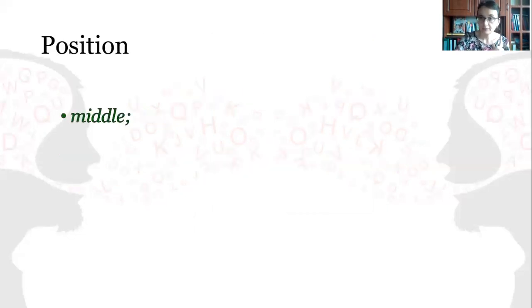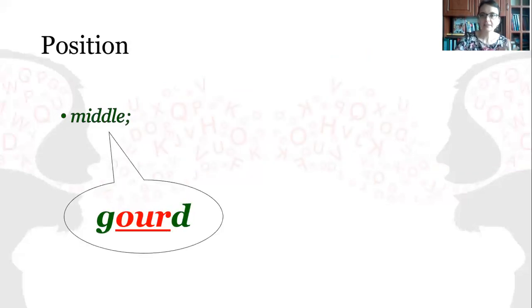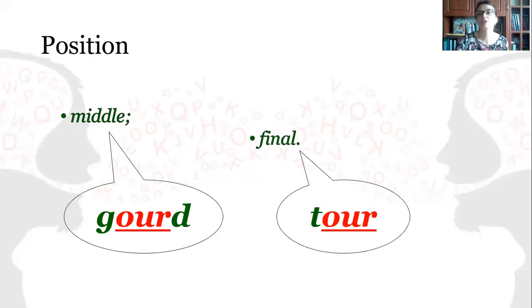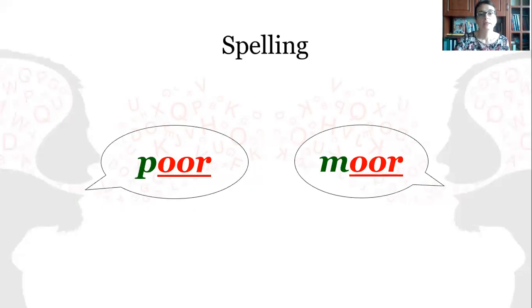It can occur in middle position—it doesn't occur in initial position—as in gourd, and in final position as in tour. Let's see what the spelling is. It can be spelled with the help of double O plus R as in moor, poor. However, in American English there might be variation and you can hear the word being pronounced as poor.